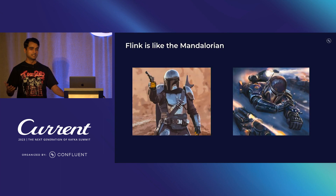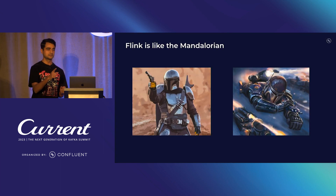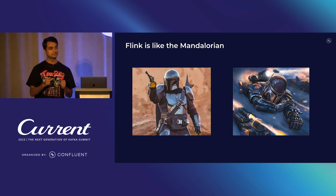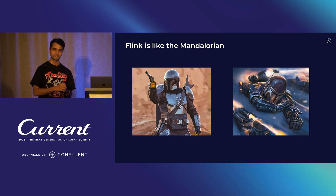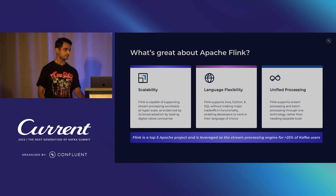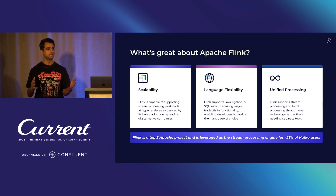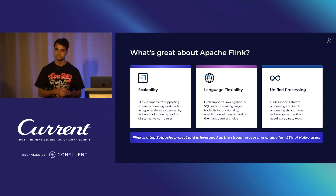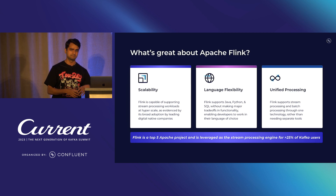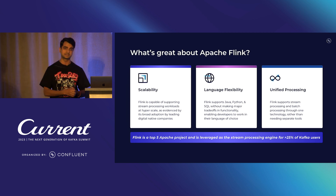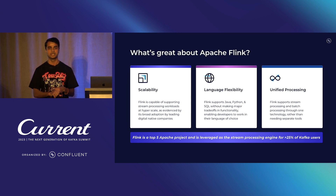Why Flink? Flink is like the Mandalorian — this is where the Star Wars question comes in. Flink is powerful, just like the Mandalorian. It's a mercenary because it gives you all the weapons and tools to master stream processing. First, scalability: there are inherent primitives in Flink because scaling happens on the task managers, so it scales horizontally really well. It's proven at scale at companies like Netflix, Bloomberg, and Uber Eats.